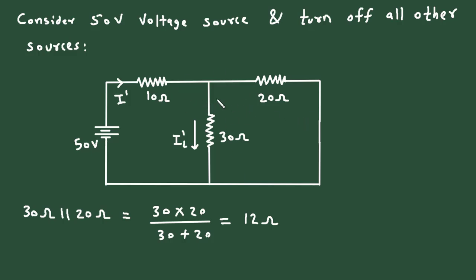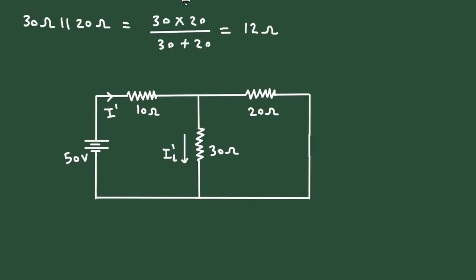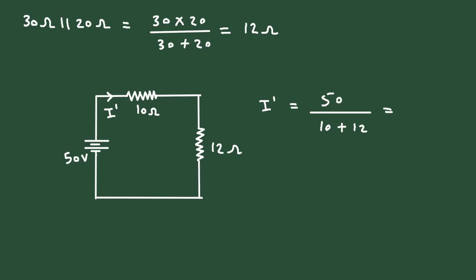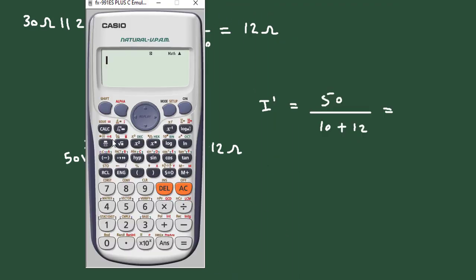We can redraw this circuit and replace the parallel combination with 12 Ohm. Now we can easily find the value of current I prime. I prime equals voltage divided by resistance, so 50 divided by 10 plus 12, which gives 2.27 ampere.